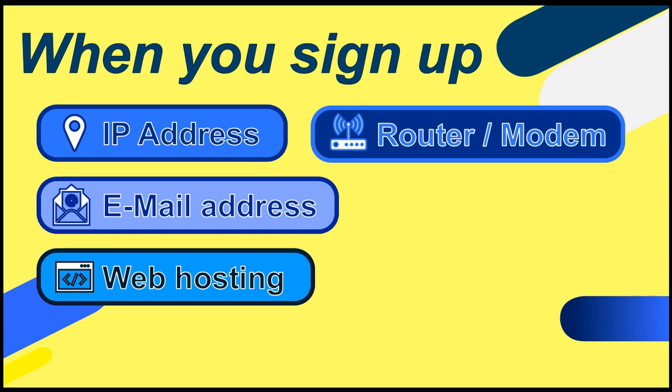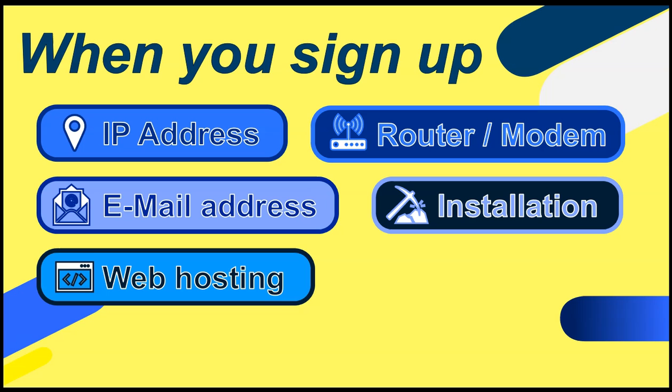Some contracts will include a free or discounted modem or router, which allows you to connect to their specific type of network, and some provide installation for any cable or equipment that you require to get your internet going.